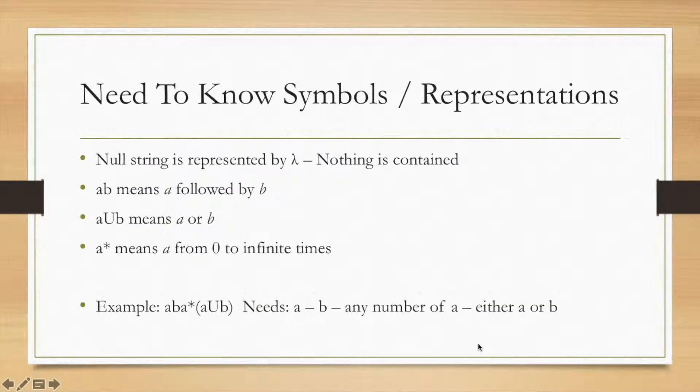For some need-to-know symbols, again we've covered most of this. The union is A or B. A star is A from zero to infinite times. The null string is the only thing that's new here—the lambda symbol. That just means nothing is contained. For a review, this would be a regular expression: you need an A to start, then a B, then any number of A's, so that could be zero or infinity, and then either an A or a B to close the string out.